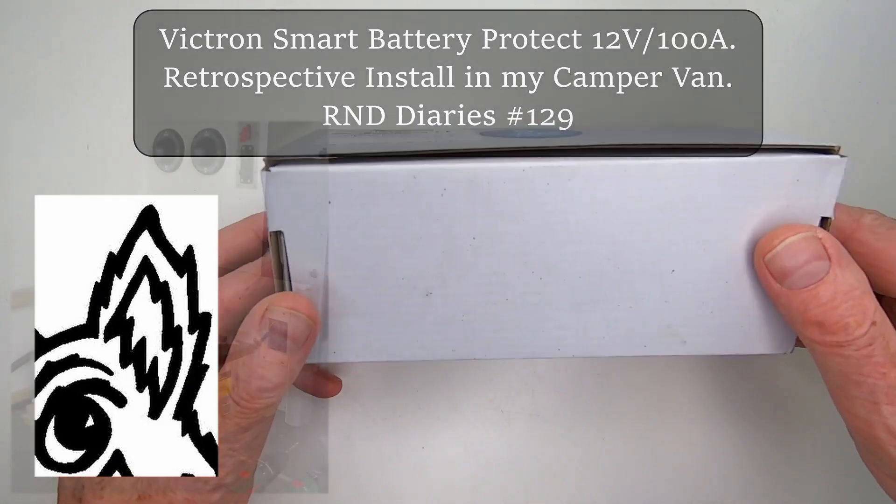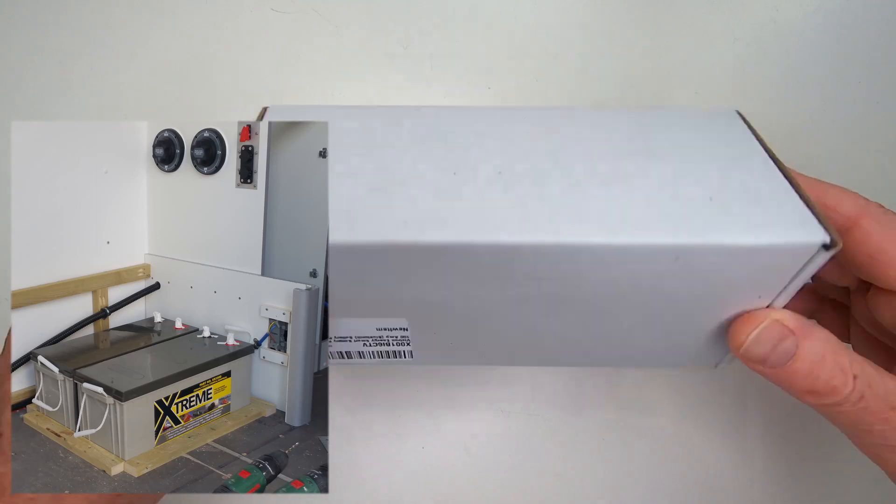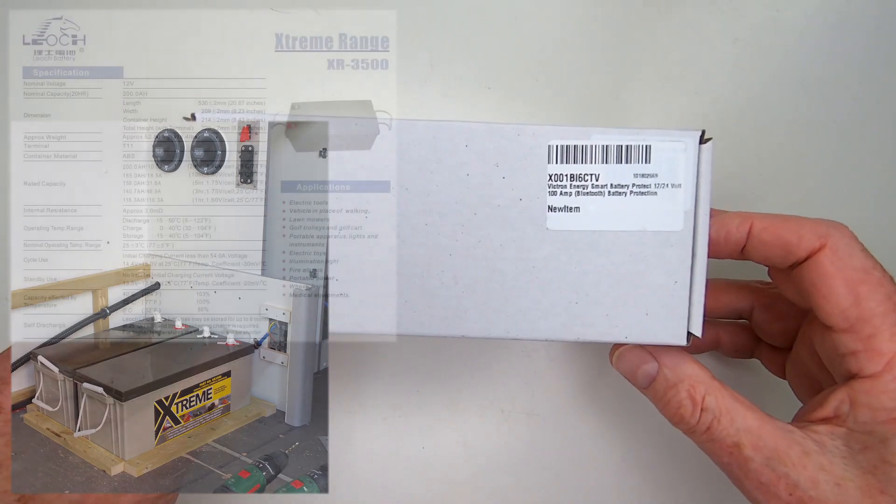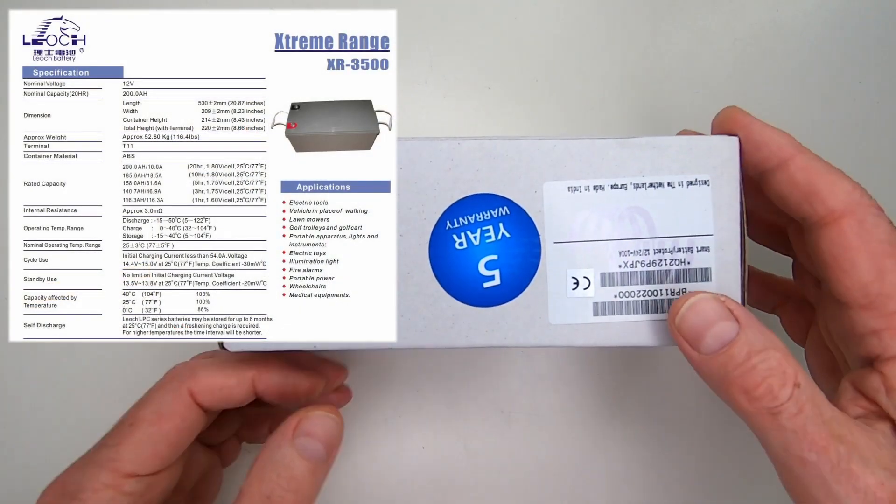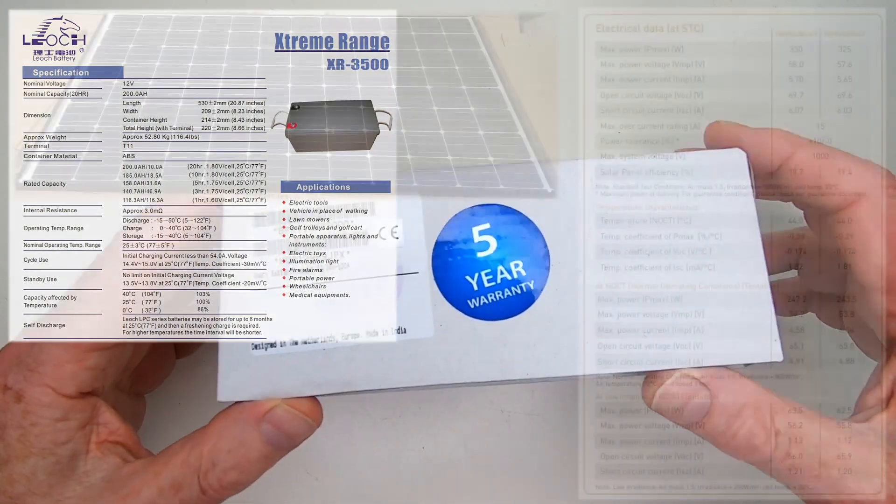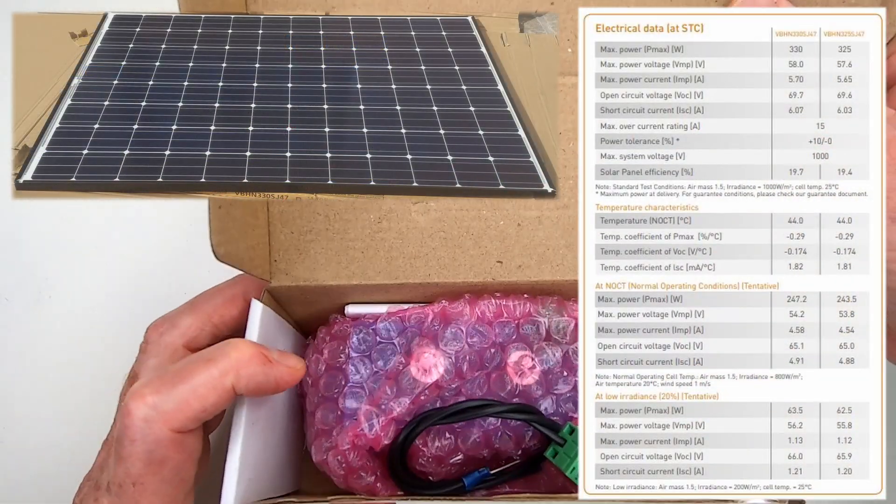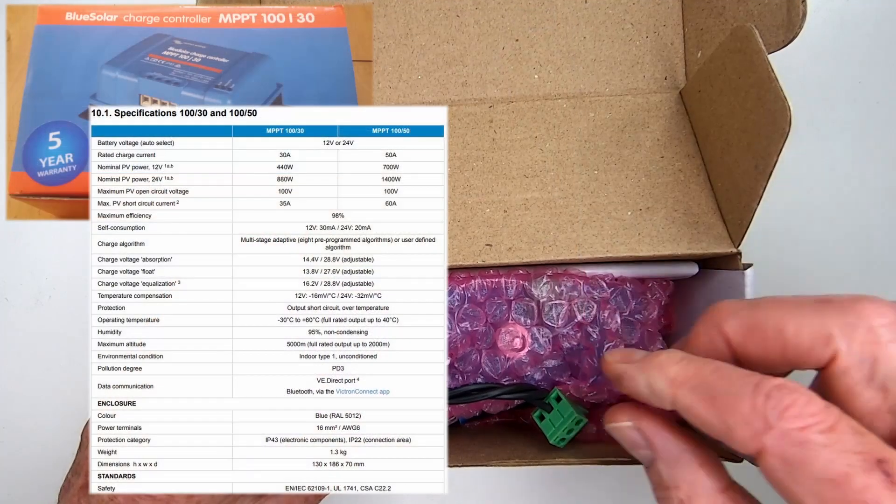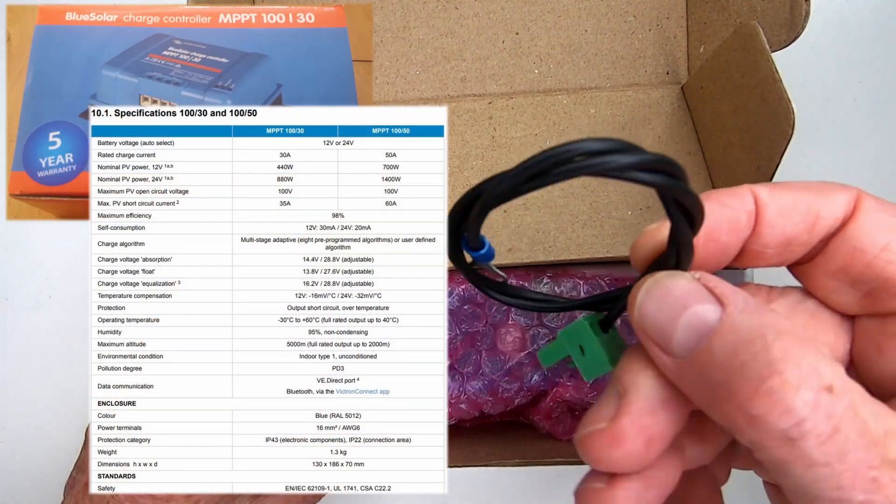I'm reasonably sure I've never stressed the two Leoc 200Ah AGM batteries in my camper van, which are charged relentlessly by a Panasonic N325 solar panel linked via a Victron MPPT-130 charge controller, albeit for the majority of the time in Scottish weather.